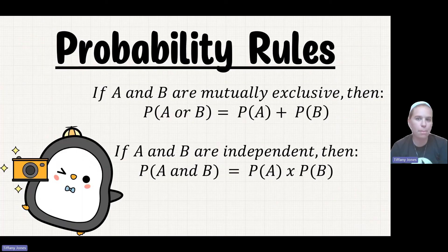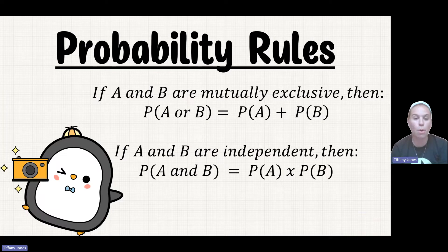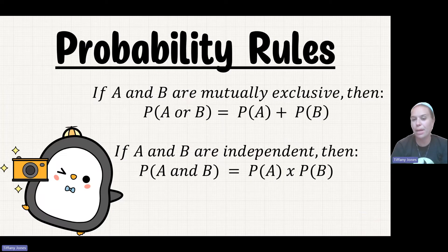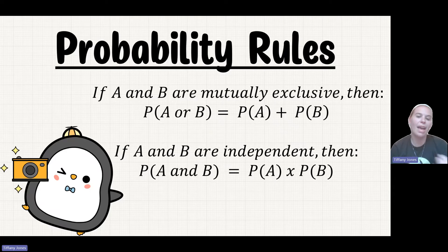Now, we don't actually need the probability rules in order to do this question, but I did want to take a moment to refresh us on them. So if the probability of A and B are mutually exclusive, then the probability of A or B is equal to probability of A plus probability of B.